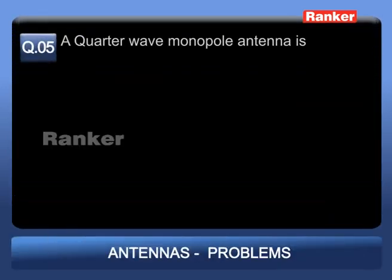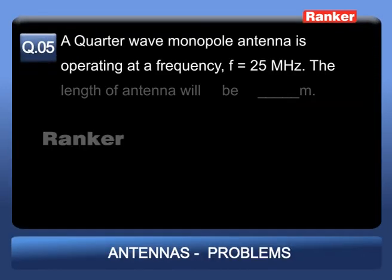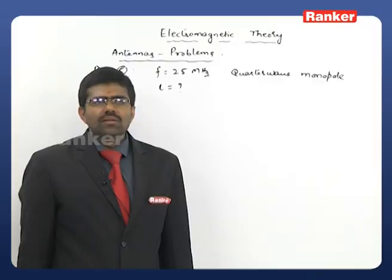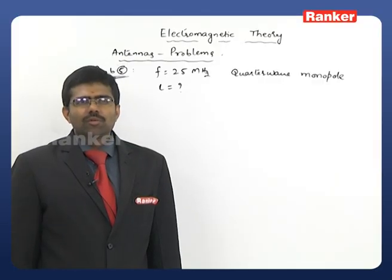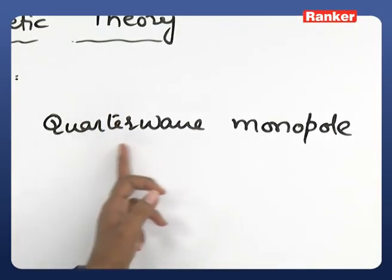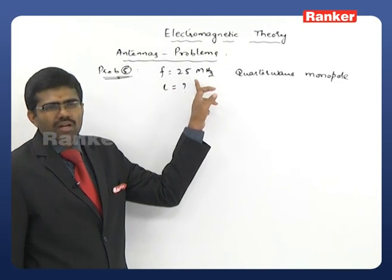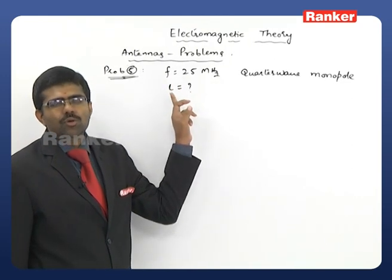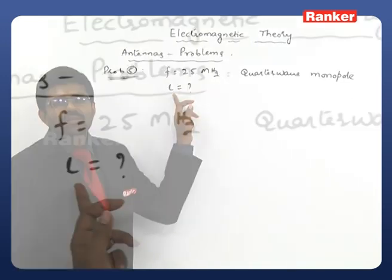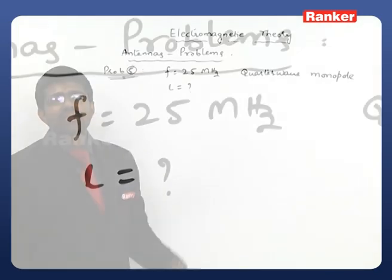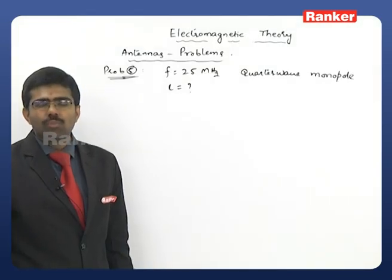Problem 5: A quarter-wave monopole antenna is operating at a frequency f = 25 MHz. The length of the antenna will be how many meters? The term 'quarter wave' indicates that the length of the antenna is λ/4.